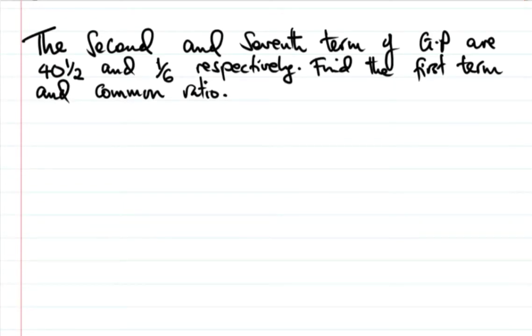Let's find the solution of this geometric progression problem. The question says the second and seventh terms of GP are 40½ and ⅙ respectively. We have been asked to find the first term as well as the common ratio. Respectively means this one is the second term and this one is the seventh term.